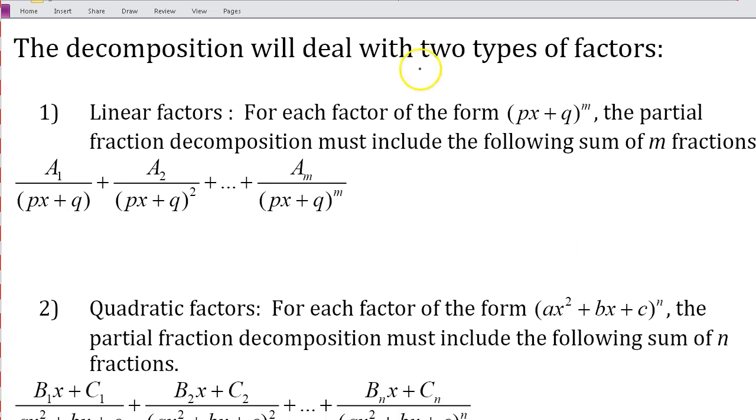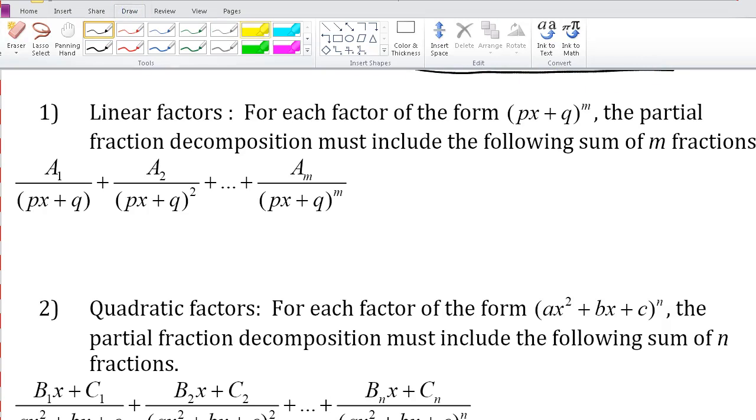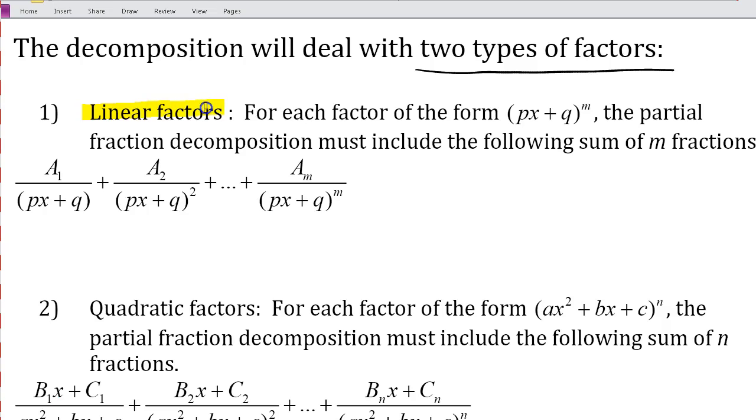We're going to look at two types of factors. We're going to look at linear factors and quadratic factors. So for linear factors, for each factor in the form of px plus q raised to the m, the partial fraction decomposition must include the following sum of m fractions.